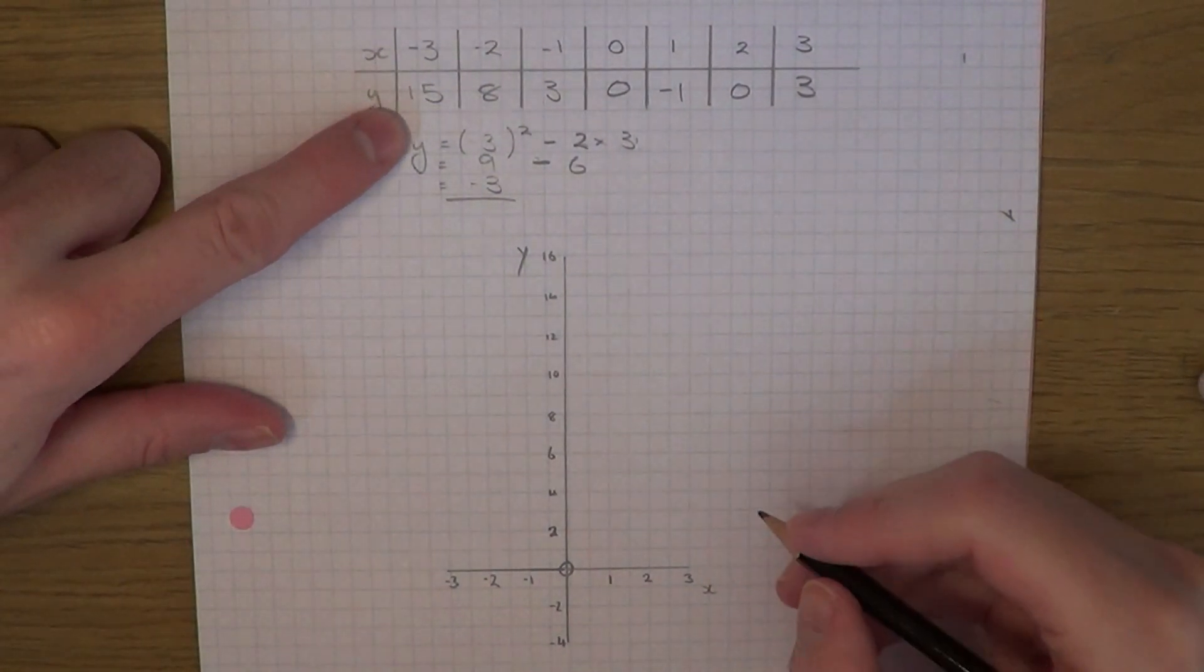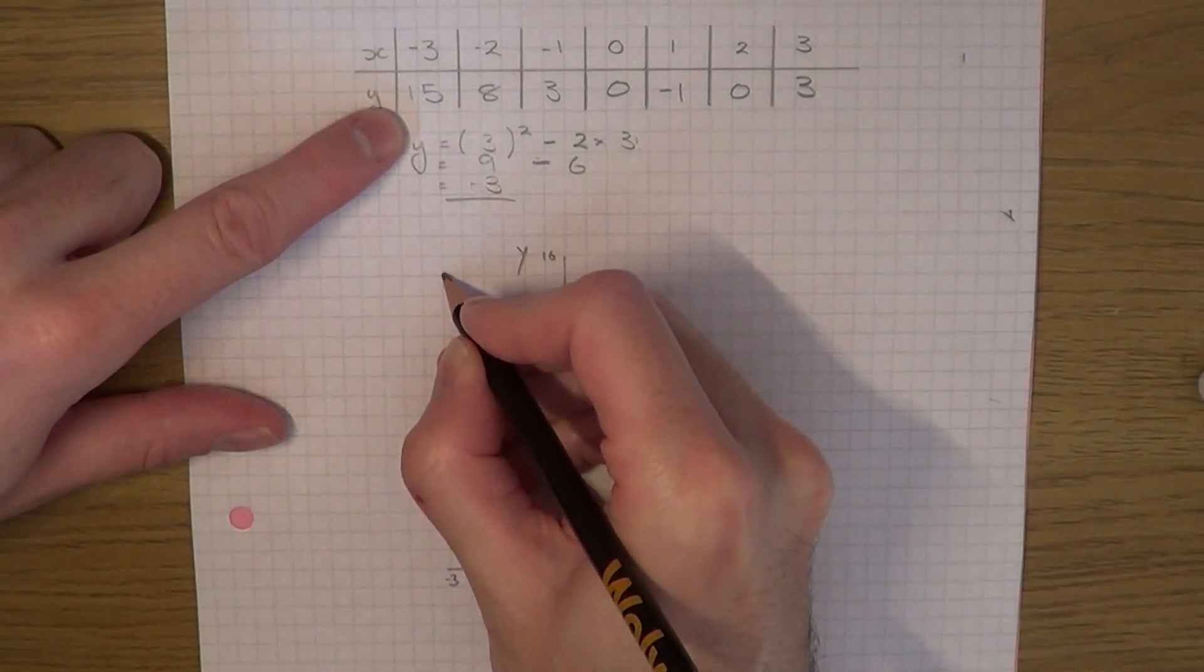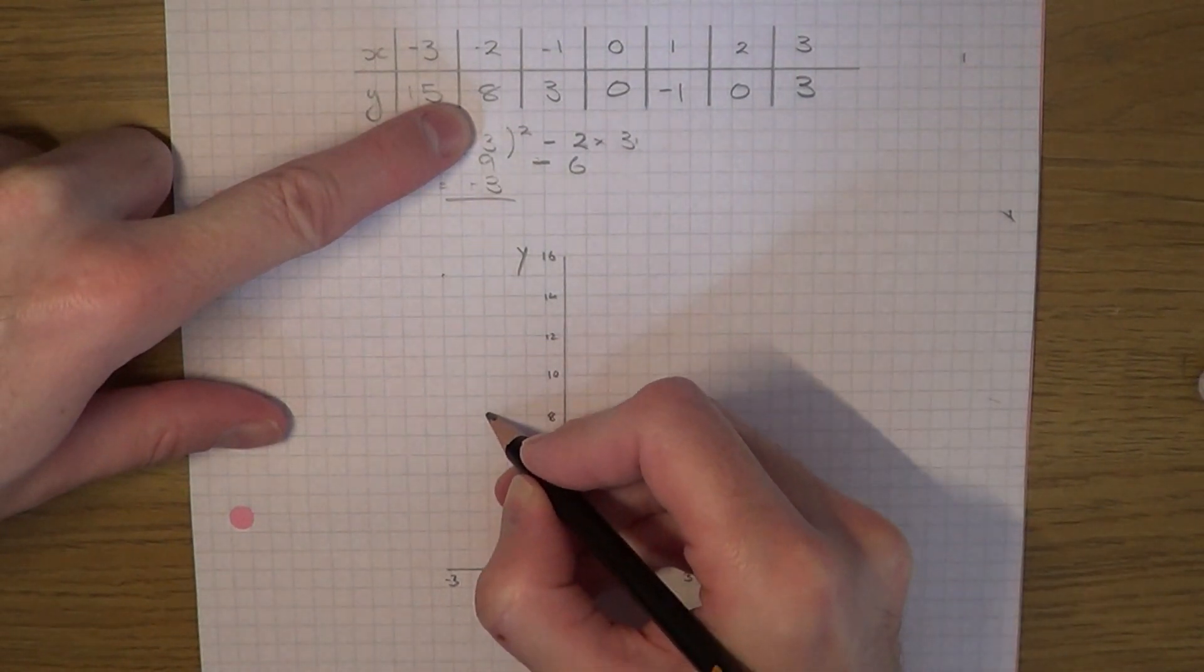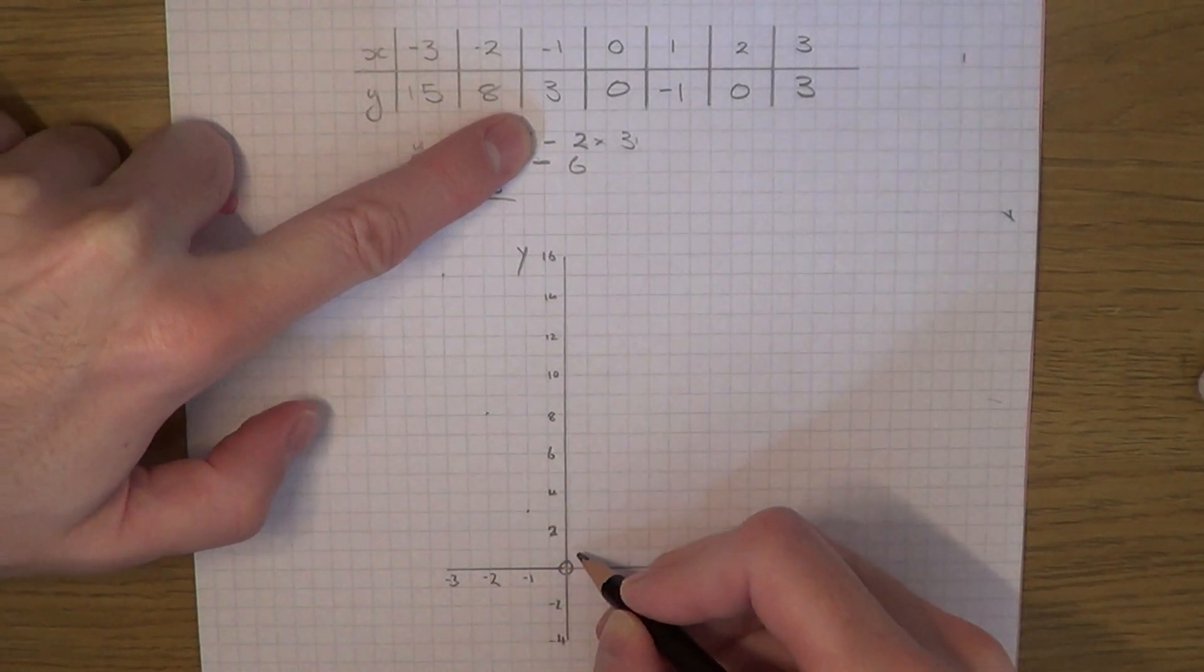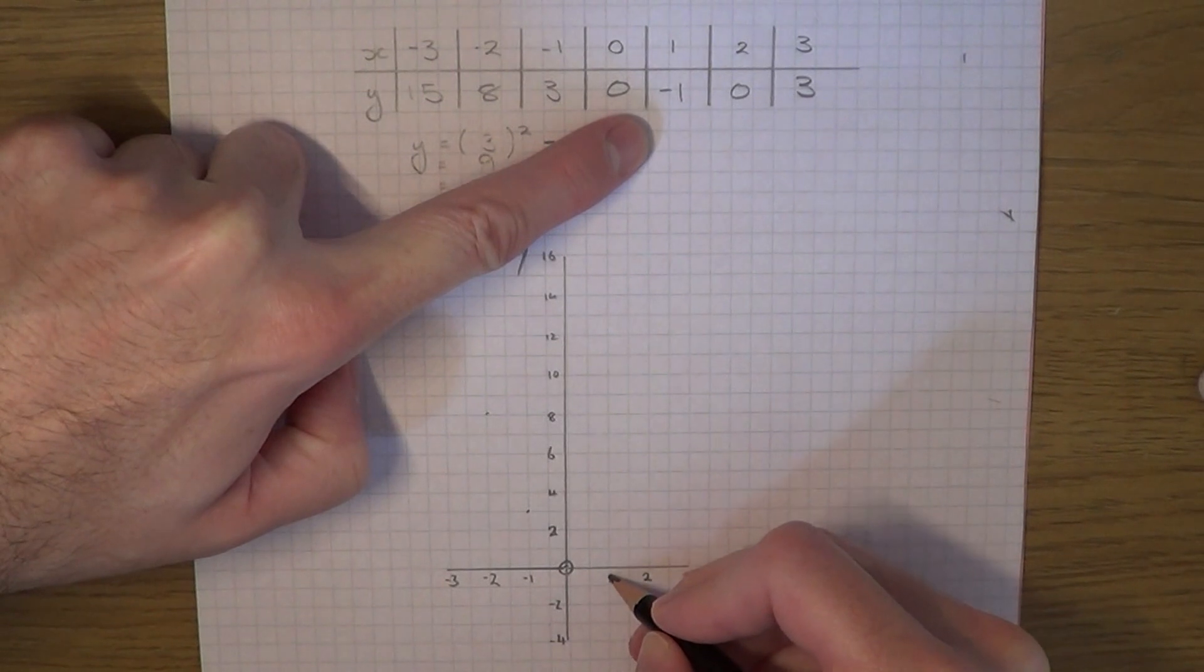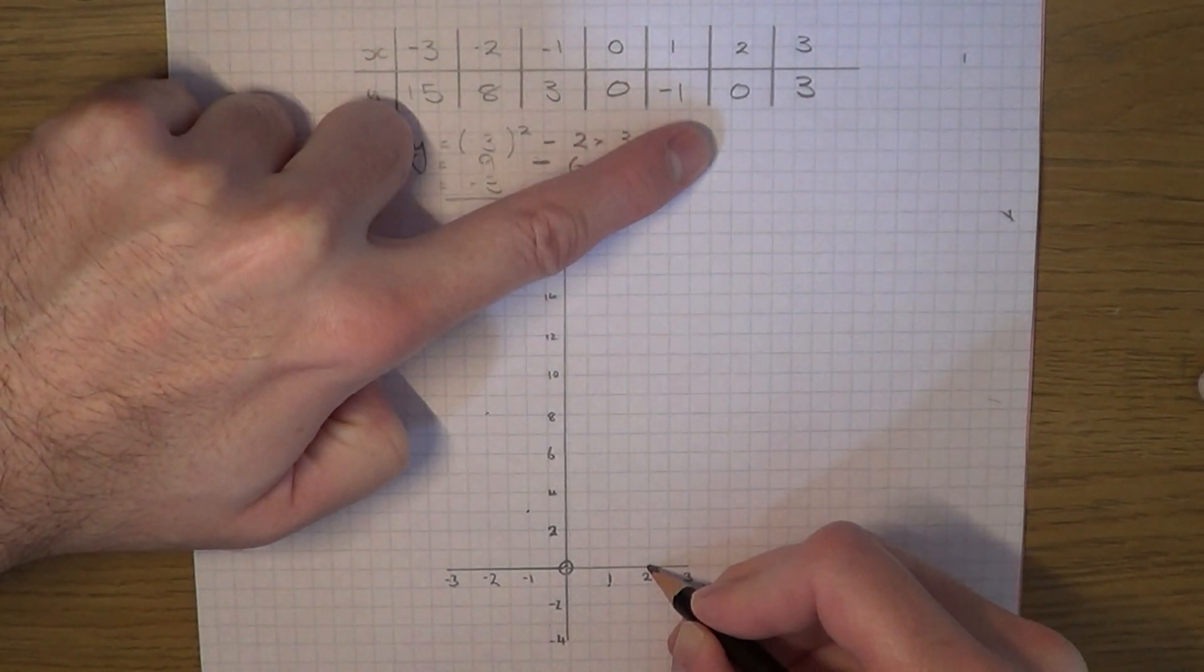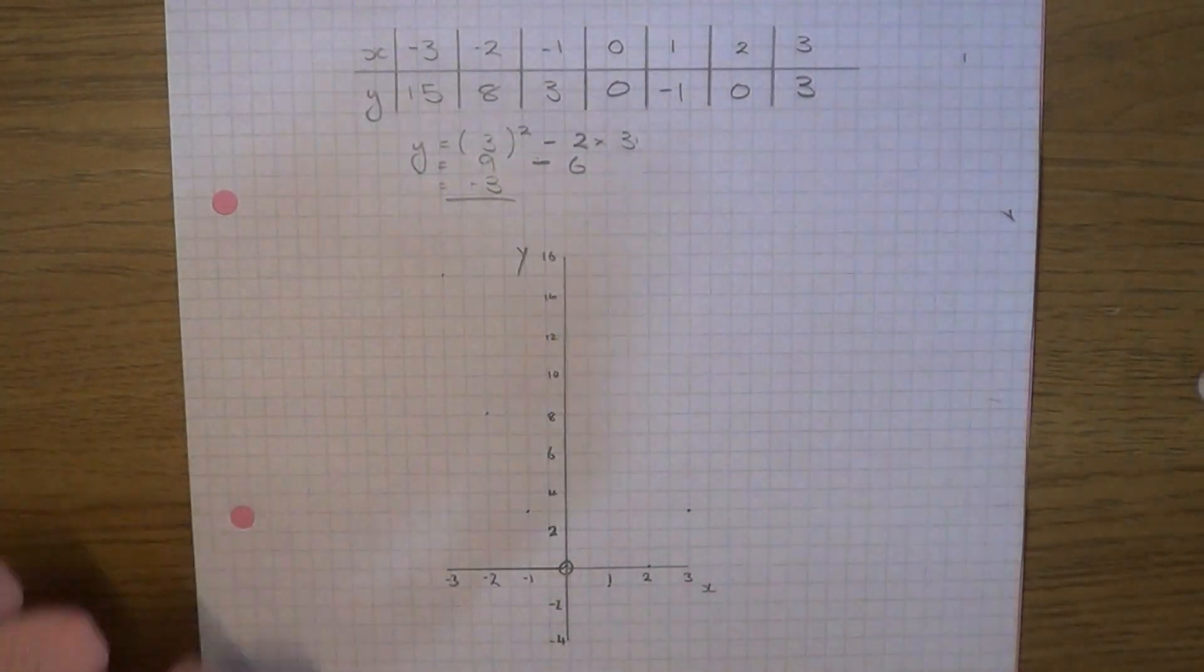Our first one was minus 3, 15, so that would be here. Our next one was minus 2 and 8. Our next one was minus 1 and 3. Then we had 0, 0. Then we had 1 and minus 1. And 2 and 0. And our final one was 3 and 3.